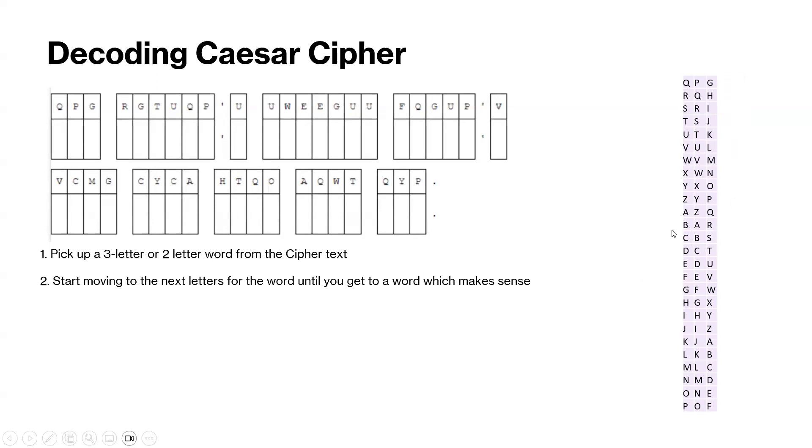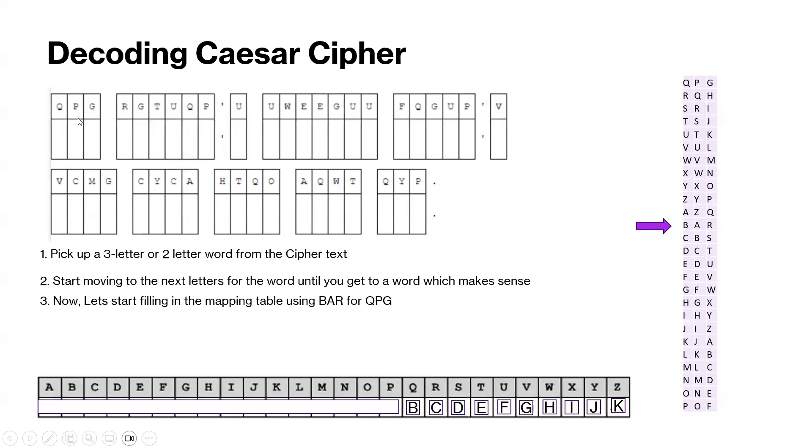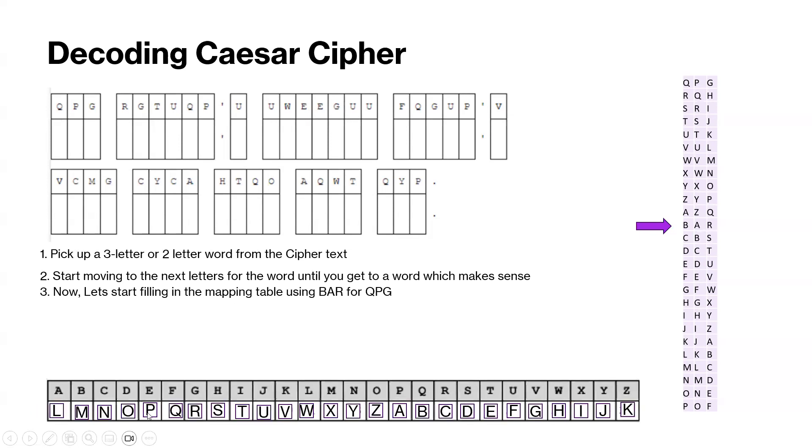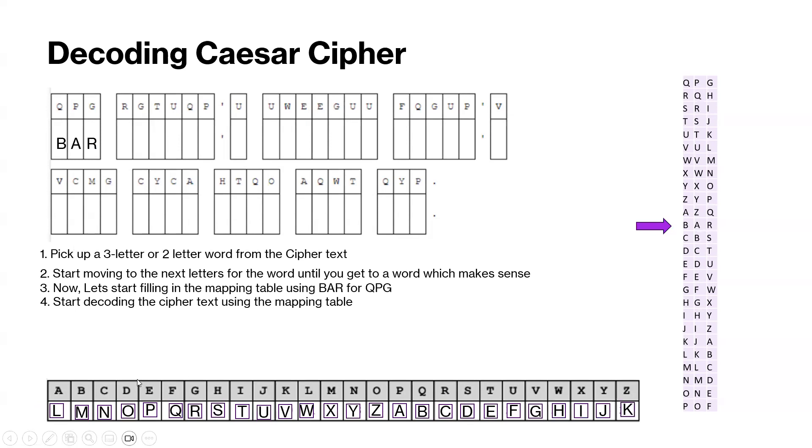We have bar, that makes sense, and then we have one. This one also makes sense. Now let's start filling in the mapping diagram using bar for qpg. This is what our mapping table will look like, going all the way through the alphabet.